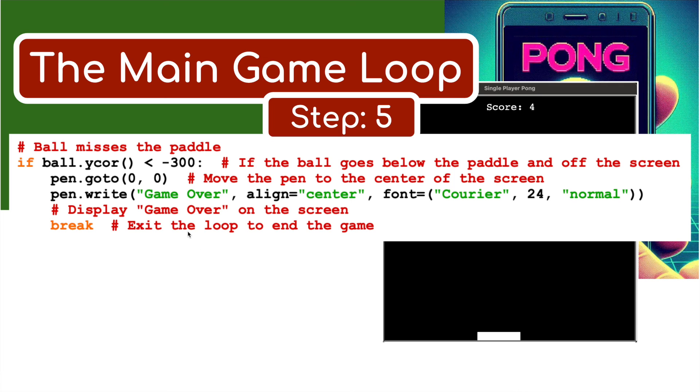It's going to write the word game over right in the middle of the screen. Break - and that's going to exit the loop and end the game. So if the ball travels past the paddle and off the screen, then the game is over and it writes the word game over.